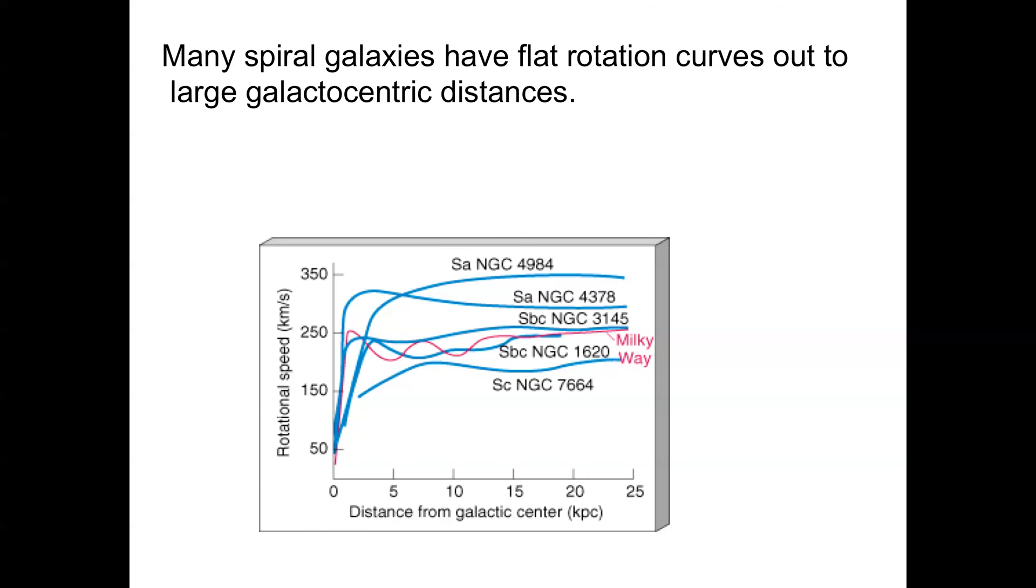If you actually look at the rotation curves of galaxies, you see they actually follow this rule. The velocity is constant outside of the inner part. This indicates that the amount of matter in each successive shell is staying the same as you go out to very large distances in these galaxies. This is something that Vera Rubin discovered in the 1960s.